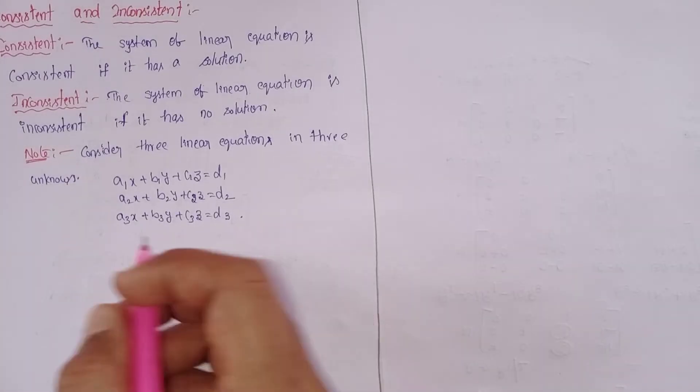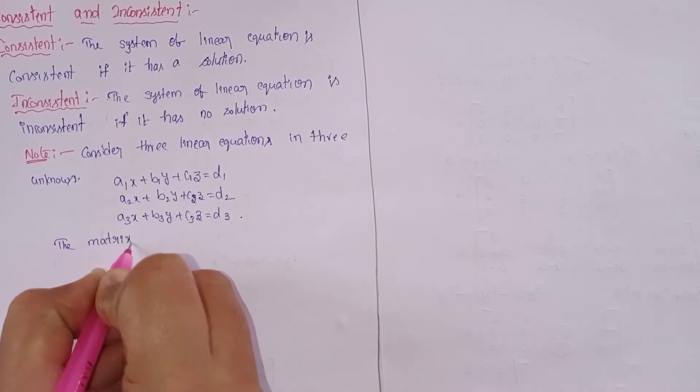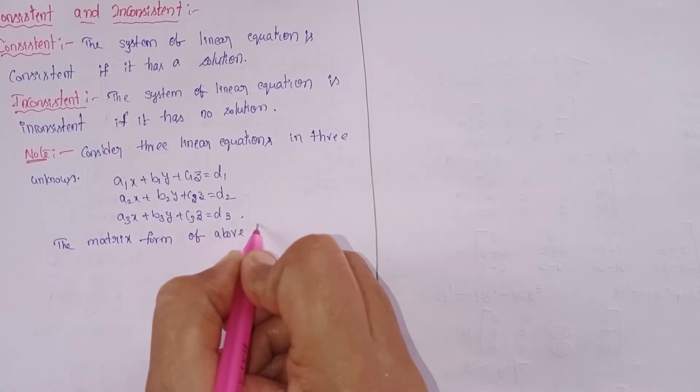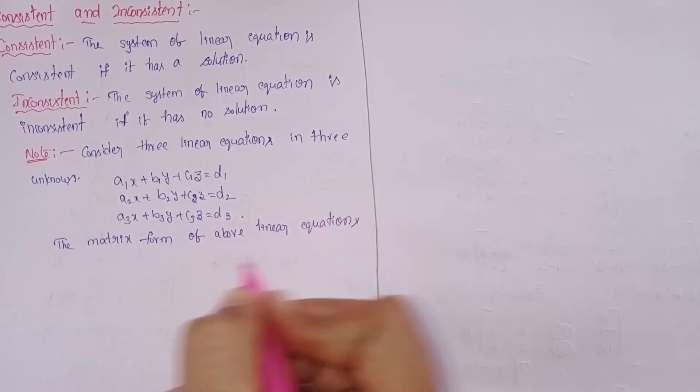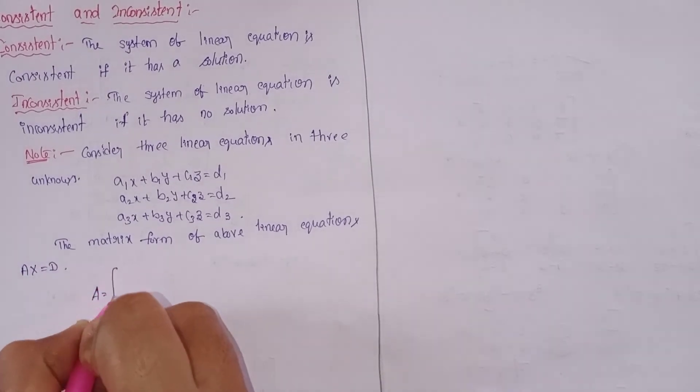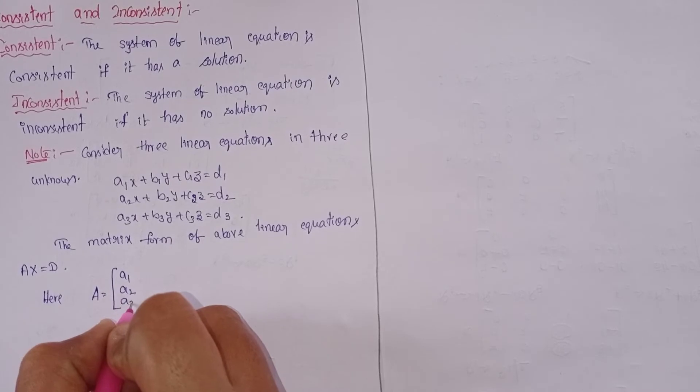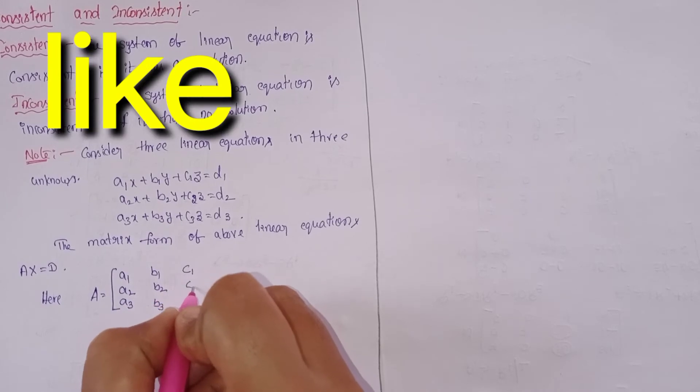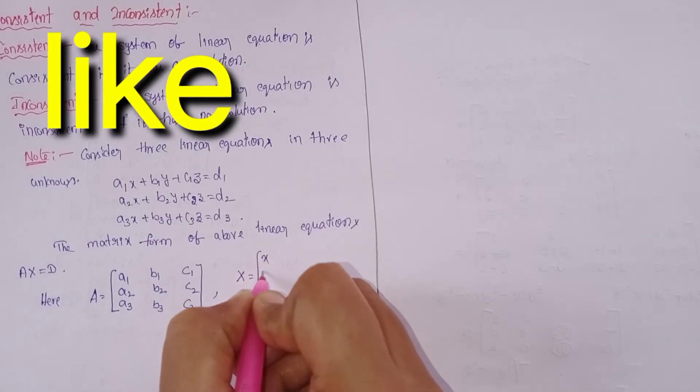The matrix form of above linear equations: AX = D. Here A equals the coefficient matrix, X equals the variable vector x, y, z, and D is the vector d1, d2, d3. X coefficients right in column 1, y coefficients right in column 2, and z coefficients right in column 3.